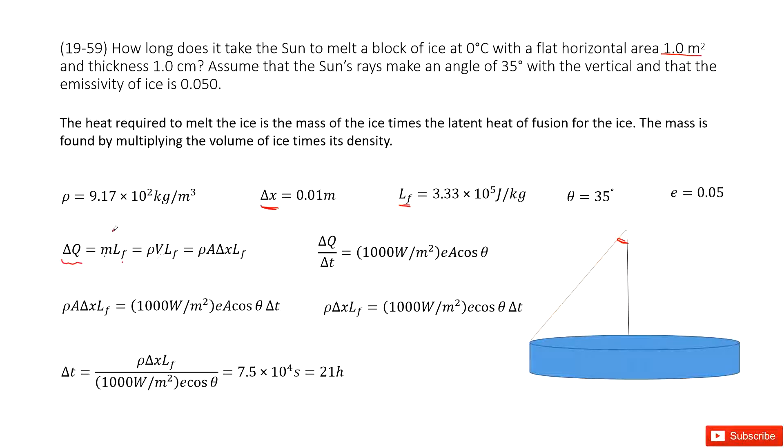The mass of ice is the density times the volume. This density can be found in the textbook. The volume for this ice is the surface area times the depth.